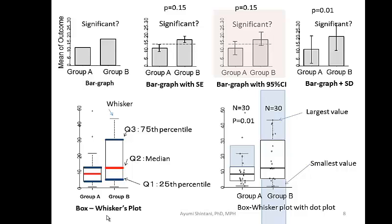Instead, use the interquartile range — the 25th and 75th percentiles. For skewed data, report the median and interquartile range. For example, if lorazepam median is 5 mg with an IQR of 2 to 15 mg, you can say 25% of patients use 2 mg or more, and 75% of patients use more than 15 mg. That's a much more meaningful description.